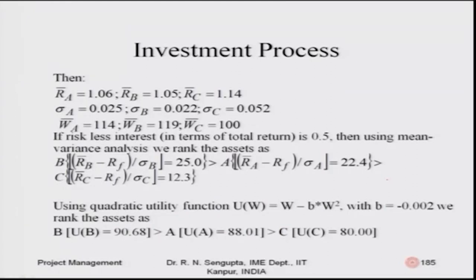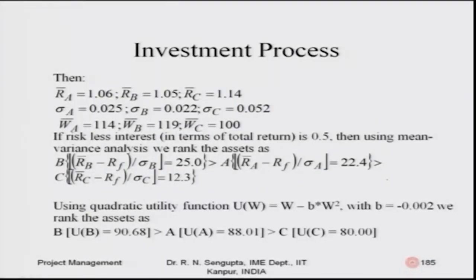I find the average values of returns: sum the return values for all outcomes and divide by the number of outcomes. The average returns are: A̅ = 1.06 (six percent extra return), B̅ = 1.05 (five percent), and C̅ = 1.14 (fourteen percent). The standard deviations are: σ_A = 0.025, σ_B = 0.022, and σ_C = 0.052.